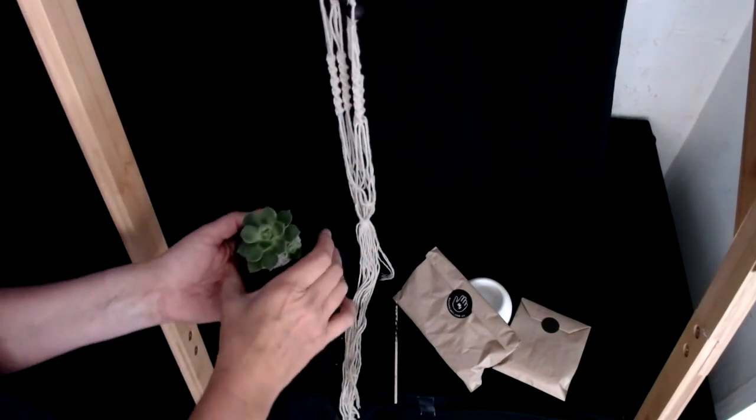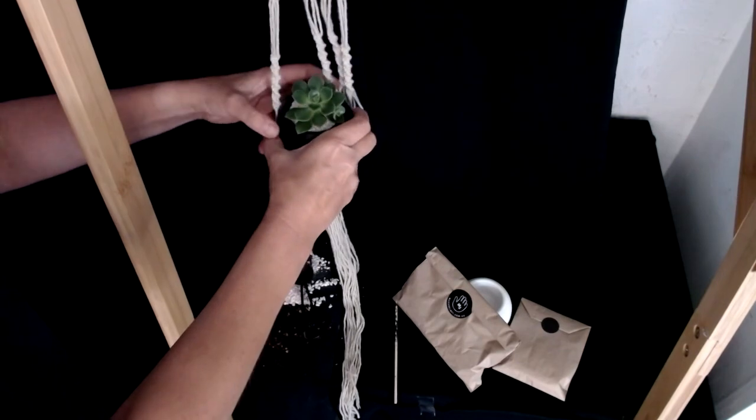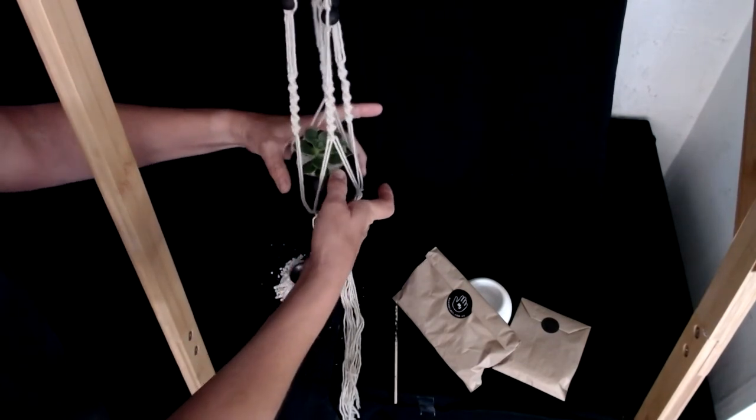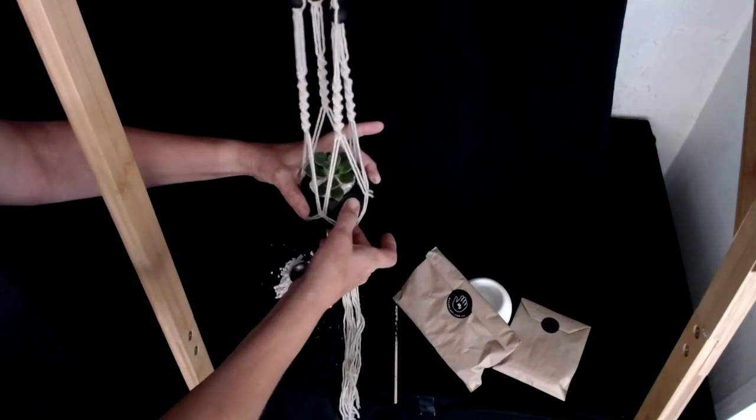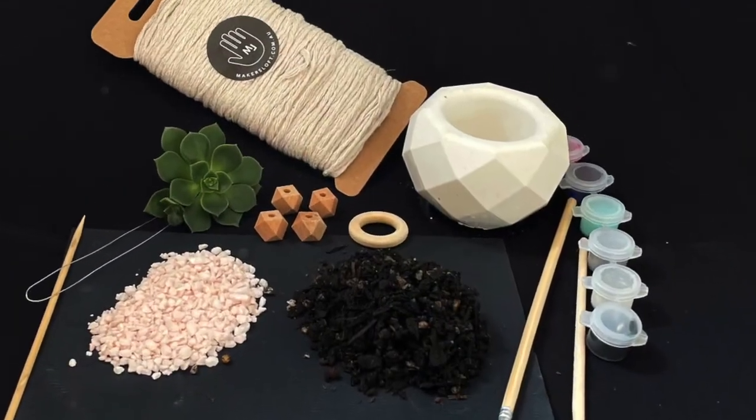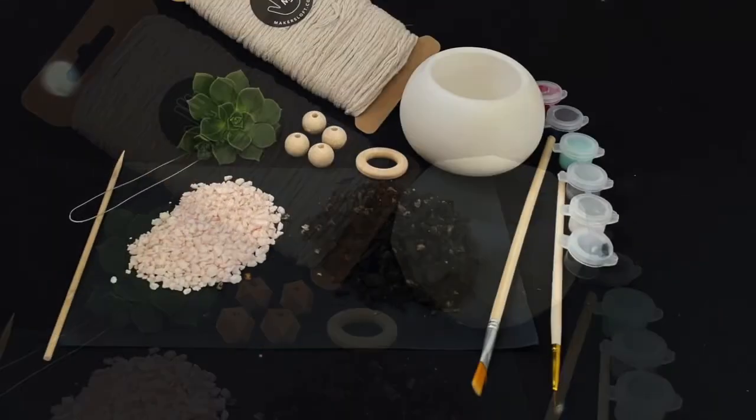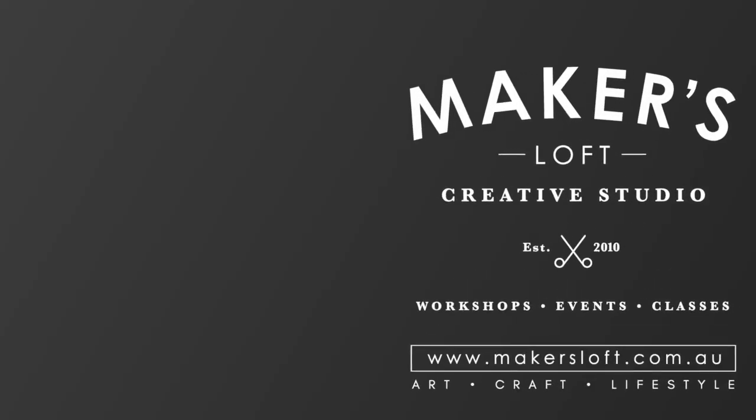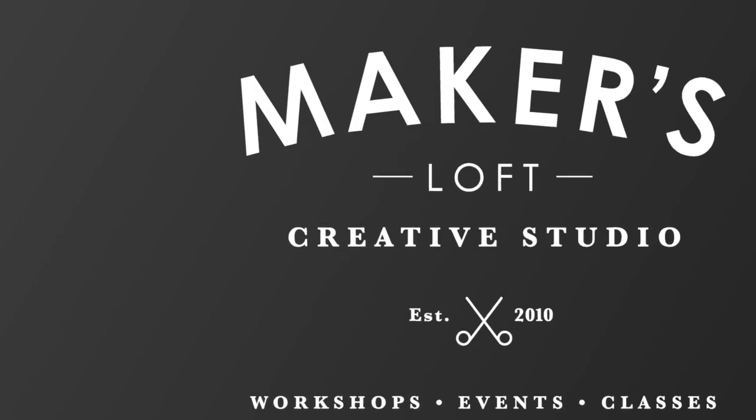We are now ready to place our pot back into our plant hanger. Your little succulent shouldn't need too much care. All it needs is a little bit of daylight and some drops of water either once a week or once every couple of days.